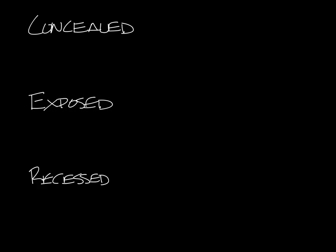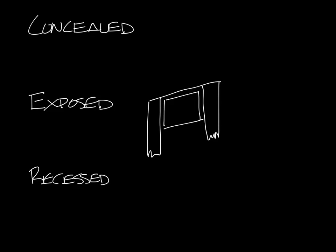I'm going to start with exposed because it's the most obvious. Exposed fan coils are completely visible in the space — you'll see this under a window in your hotel room, for instance. So below the window would be your fan coil. You have the grill on top blowing the air out of the unit, and it's drawing air in through the bottom. This is an exposed fan coil.